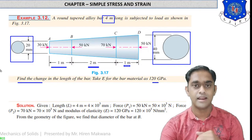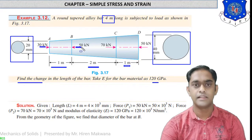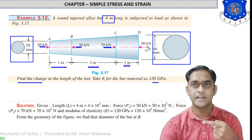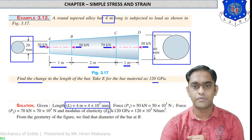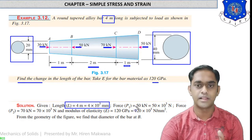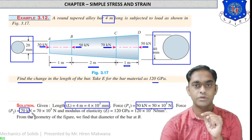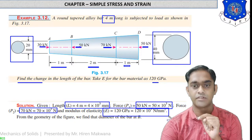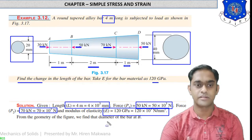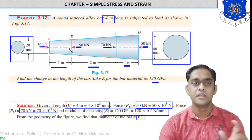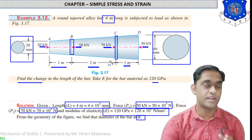There are multiple forces acting at intermediate points: 30 kN compressive at point A, 50 kN leftward at point B, 70 kN rightward at point C, and 50 kN leftward at point D. We need to find the diameters at points B and C, since only the diameters at A (20 mm) and D (40 mm) are known.